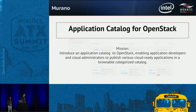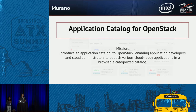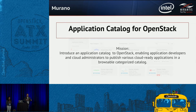So, Murano. This slide goes from one year to another year, but I really like it. Murano is an application catalog for OpenStack. Our mission is to provide application developers the ability to easily create an application for the cloud, and also give cloud operators a way to publish and provide applications to end users. Any user on the cloud can go to OpenStack, click one button, and receive WordPress, a CRM system, or whatever in one click.